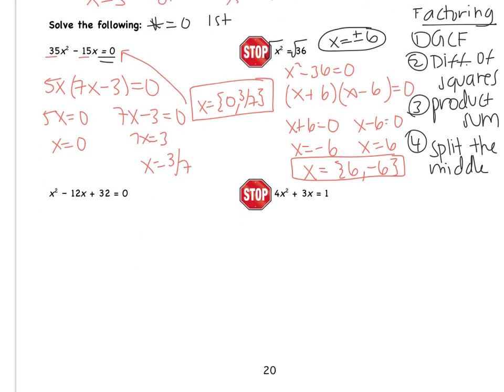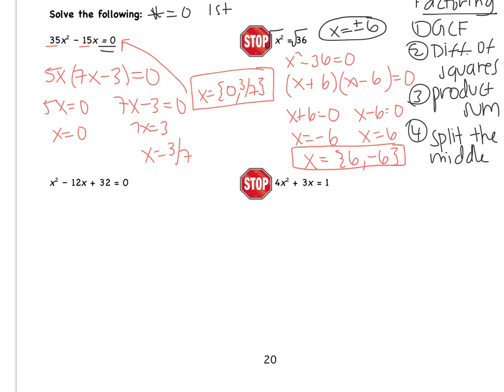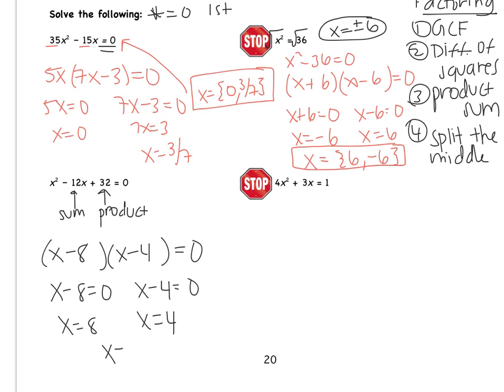Okay, so let's move on to the next two. Looking at the example on the left, this is a product sum example. I'm looking for two numbers whose product is 32 and whose sum is negative 12. That adds to negative 12. Hopefully you know that that's negative 8 and negative 4. So I get x minus 8, x minus 4 equals 0. Now I set both equal to 0 and solve. If I add 8, I get x equals 8. Adding 4, I get x equals 4. So my solution set is 4 and positive 8.